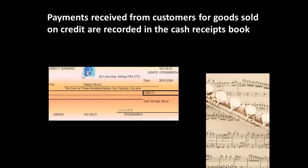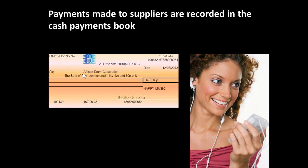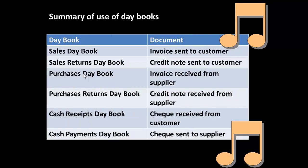Now what about checks? Well it depends whether they're from someone or to someone. If we've got payments received from customers then we record them in a cash receipts book because we received the money. Checks that we've made out — payments made to suppliers — are recorded in a cash payments book because we've paid somebody. So to summarize: a sales day book is used for invoices sent to customers. A sales returns day book for credit notes sent to customers. A purchases day book for invoices received from a supplier. A purchases returns day book for credit notes received from a supplier. A cash receipts day book for checks received from customers. A cash payments day book for checks sent to suppliers.